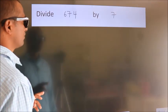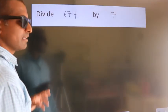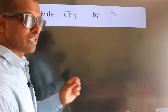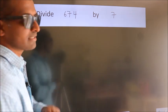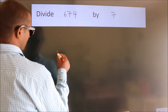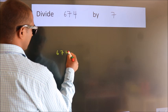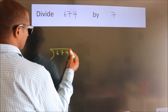Divide 674 by 7. To do this division, we should frame it in this way: 674 here, 7 here.